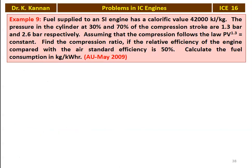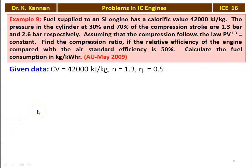This is problem number 9 from Anna University question paper May 2009. Fuel supply to an SI engine has a calorific value of 42,000 kilojoules per kilogram. The pressure in the cylinder at 30 percent and 70 percent of the compression stroke are 1.3 bar and 2.6 bar respectively. Assuming compression follows the law PV to the power 1.3 equals constant. Find the compression ratio. If the relative efficiency compared with the air standard efficiency is 50 percent, calculate the fuel consumption in kilogram per kilowatt hour. The given data: calorific value is 42,000 kJ/kg, polytropic index n = 1.3, and relative efficiency is 0.5.